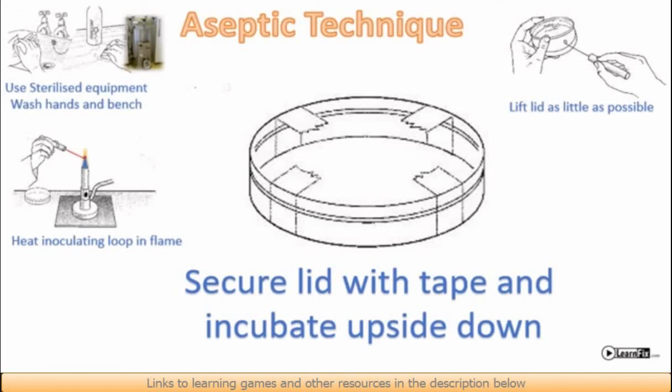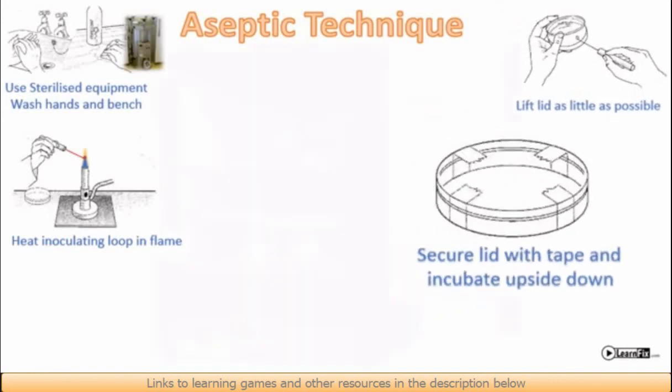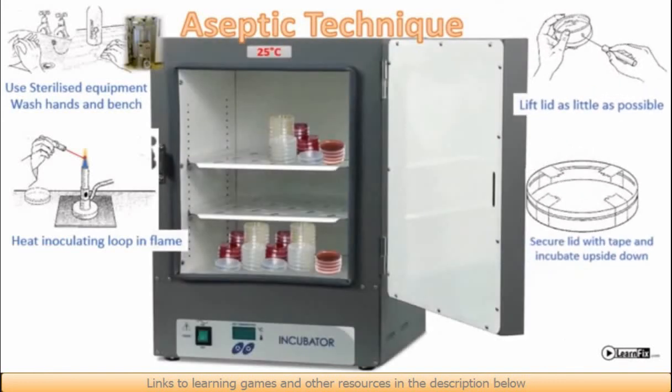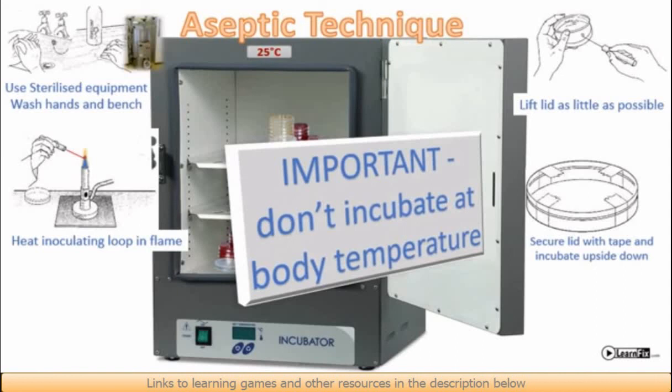A warm environment allows bacteria to grow quickly. But if it's too warm we risk growing dangerous bacteria. To avoid this problem school laboratories don't incubate above 25 degrees centigrade which is well below human body temperature. Industrial laboratories in hospitals for example may use higher temperatures to grow bacteria quicker. But they will have far stricter hygiene precautions to prevent bacteria spreading by accident.